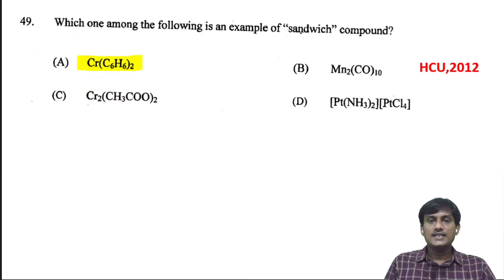Which one among the following is an example of sandwich compounds? Metallocene is one type of sandwich compound. If you take ferrocene or chromocene, these are sandwich compounds. In chromocene, you have two benzene rings. In between two benzene rings, the chromium is sandwiched between these two benzene rings. So the correct option is Cr(C6H6)2.